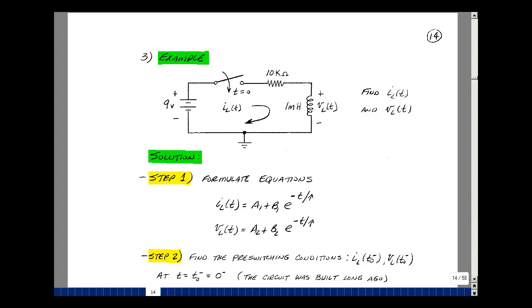This lesson deals with an RL charging circuit. You can find these notes in the ECE 201 e-book in Chapter 7, starting on page 14. Suppose you have a circuit with a 9-volt battery, a switch that closes at t equals 0, and then a resistance and an inductance. Those values are 10k and 1 millihenry.